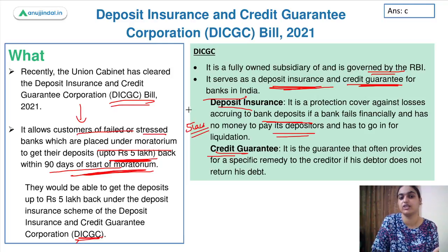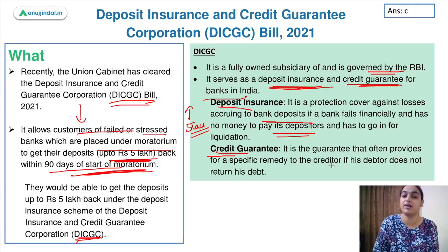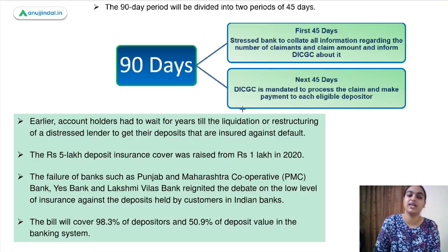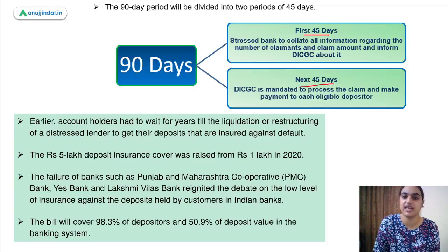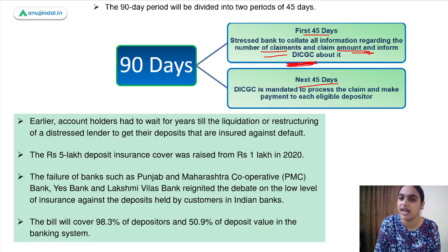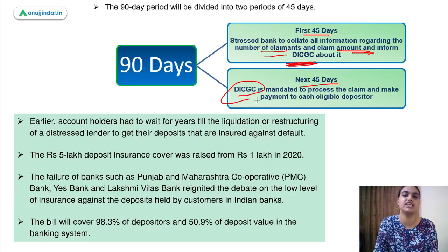The 90-day period will be divided into two halves: the first 45 days and the next 45 days. In the first 45 days, the stressed bank will collect all information regarding the claimants and claim amount and inform DICGC. In the next 45 days, DICGC needs to process the claim and pay the depositors their money.